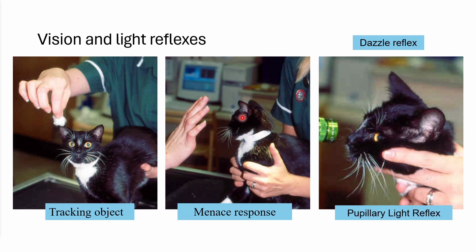You'll need an intact eye, an intact optic nerve, and intact visual pathways going to the occipital cortex. Then you need intact white matter going to the motor cortex, which goes down to the facial nerve nuclei in the brainstem. This is influenced by the cerebellum and then the eyes will close. So there's a lot going on with the menace response — make sure that you interpret it properly.